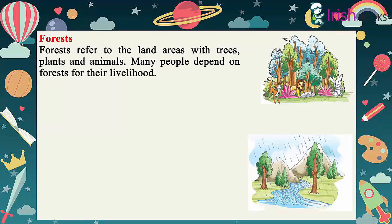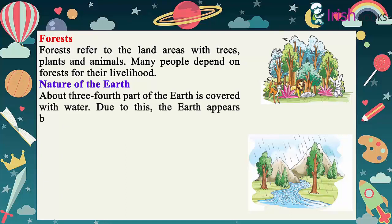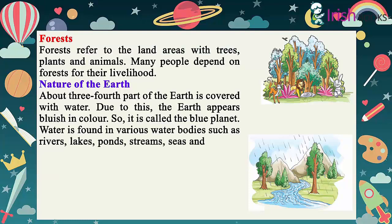About three-fourths of the earth is covered with water. Due to this, the earth appears bluish in colour, so it is called the blue planet. Water is found in various water bodies such as rivers, lakes, ponds, streams, seas and oceans.